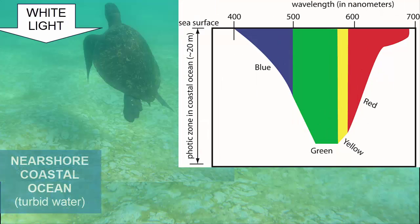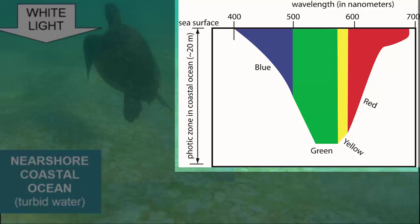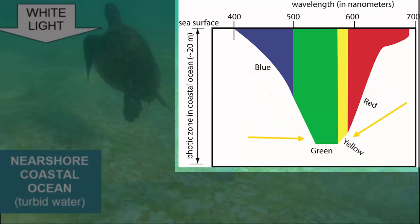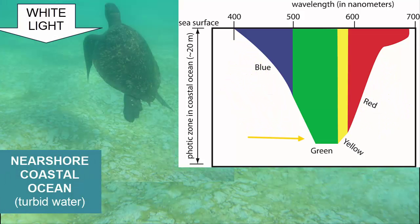In the near shore, coastal ocean, water is typically filled with varying amounts of suspended sediment and microscopic plankton. As you can see from this absorption spectrum, blue light is absorbed first, followed by red, and then yellow. Green remains the longest. Hence, when we look down into these waters, the color we see is green.